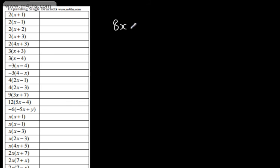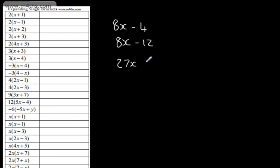This one just here: 4 multiplied by the quantity 2x minus 1. 4 lots of 2x is 8x. 4 lots of 1 is 4, so we subtract it away. This next one: 4 lots of 2x is 8x. 4 lots of 3 is 12 — we subtract that away. This one just here, we've got 9 lots of 3x plus 7. Well, 9 times by 3 is 27, so we'll have 27x. 9 times by 7 is 63, and we need to add that on. So we get 27x plus 63.